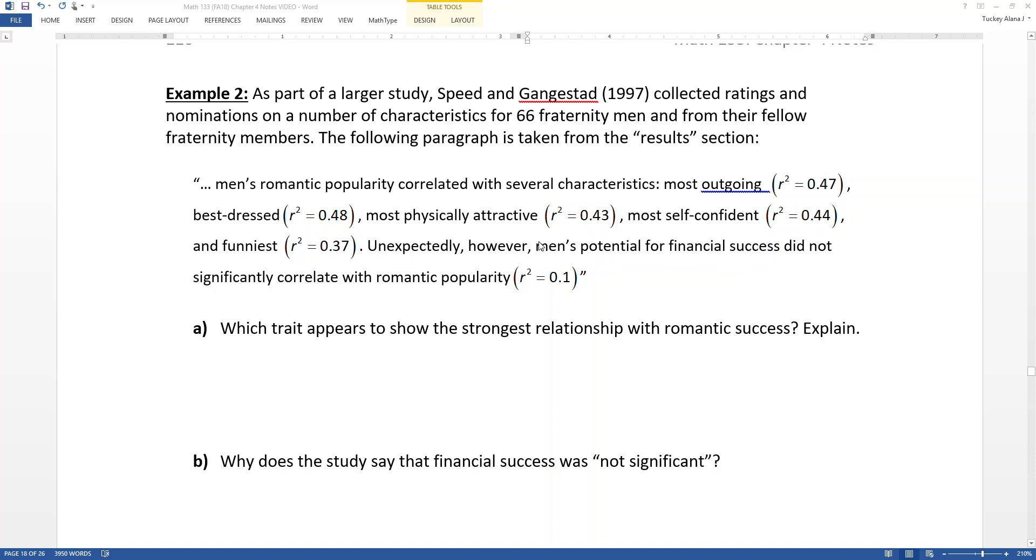So it says men's romantic popularity correlated with several characteristics: most outgoing, which had R-squared of 0.47, best dressed, which had R-squared of 0.48, most physically attractive, which is 0.43, most self-confident, which is R-squared equals 0.44, and funniest, which was R-squared equals 0.37.